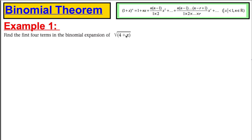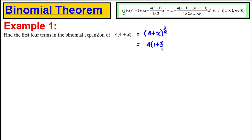Find the first four terms of the square root of (4 + x). In the previous video we did things like (1 + x) to the power of a half, but remember something very important: to expand this via the binomial theorem, that first number must be 1. We've got 4 here, so we need to make an initial adjustment. We can write this as (4 + x) to the power of a half, and then factorize the 4 out to get 4 times (1 + x/4), all to the power of a half.